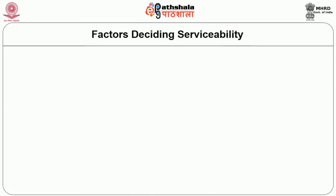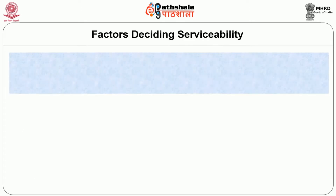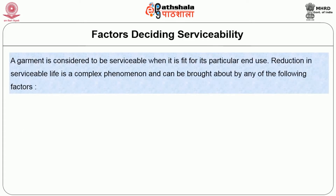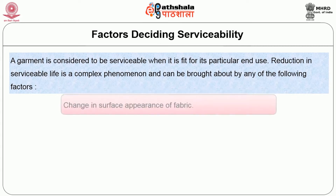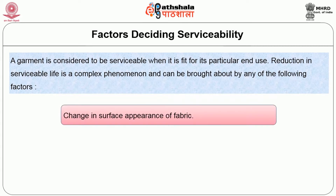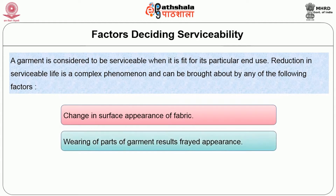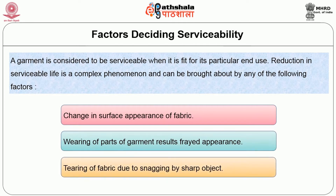Factors that decide serviceability: a woven garment is considered to be serviceable when it is fit for its particular end use. Reduction in serviceable life is a complex phenomenon and can be brought about by any of the following changes: change in surface appearance of the fabric, wearing of parts of the woven garment resulting in a frayed appearance, and tearing of fabric due to snagging by sharp objects.